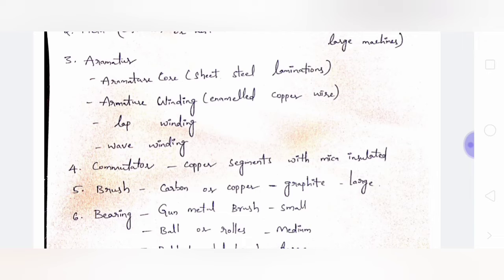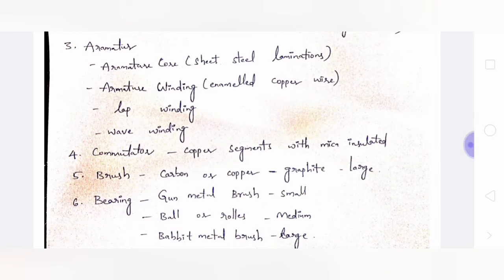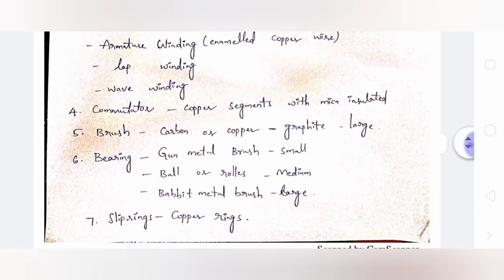The commutator is used to convert AC to DC. It uses copper segments with mica insulation. For brushes, small machines use carbon brushes and large machines use copper graphite brushes.